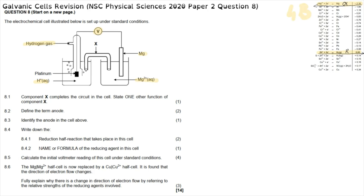Question 8.1 states that component X completes the circuit — give one other function of component X. Component X is the salt bridge, which always has two functions: completing the circuit, and maintaining electrical neutrality. Without the salt bridge, we would not have a complete flow of charge, and we would have a buildup of charge on either side. An acceptable answer is that it provides a path for the movement of ions or maintains electrical neutrality.